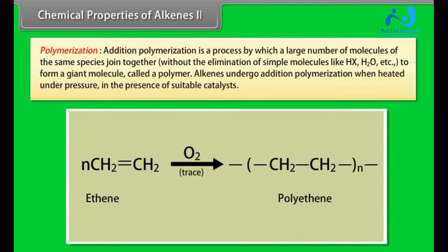Polymerization: Addition polymerization is a process by which a large number of molecules of the same species join together without the elimination of simple molecules like HX, H2O, etc. to form a giant molecule called a polymer. Alkenes undergo addition polymerization when heated under pressure in the presence of suitable catalysts. When ethene is heated to 1000 degrees centigrade under 1000 atmospheric pressure in presence of oxygen, we get polyethene.